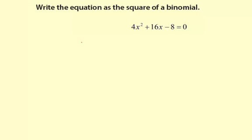Write the equation as a square of a binomial. This is kind of an intermediate step towards writing functions in vertex form when you have a number other than 1 in front of the x squared, or a leading coefficient as we call it.